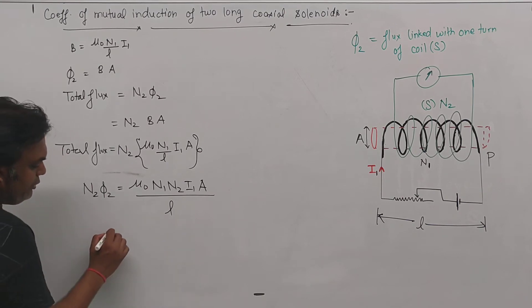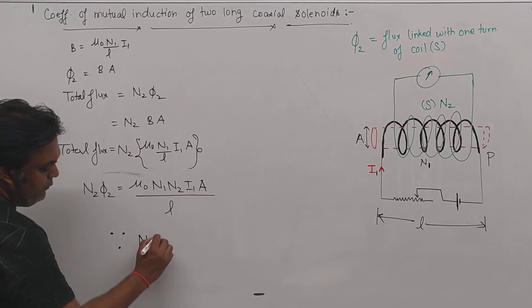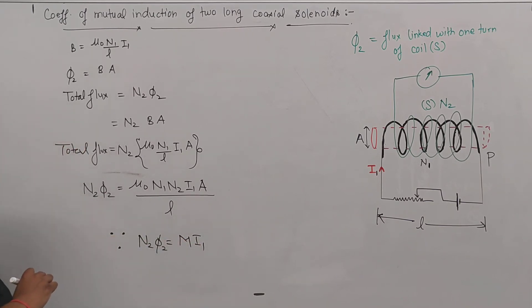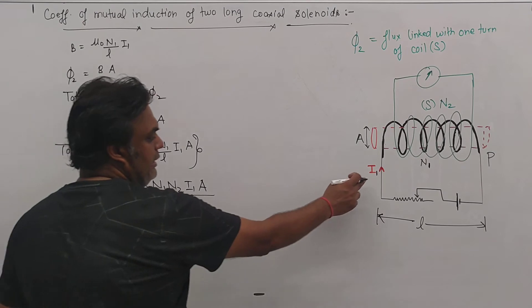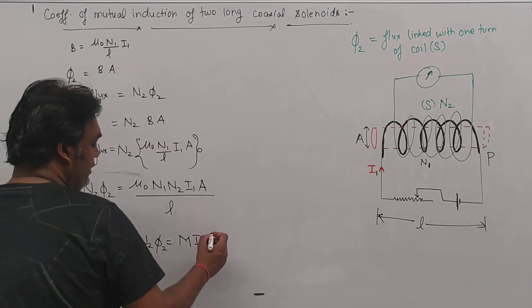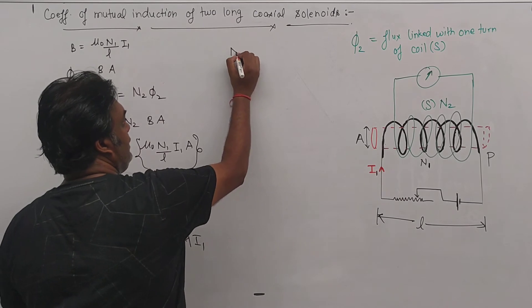From coefficient of mutual induction, we have n2φ2 = M·i1. This entire flux is proportional to the current in the primary coil. So from here, M is equal to...